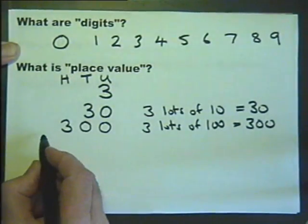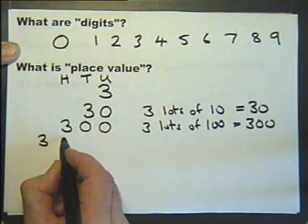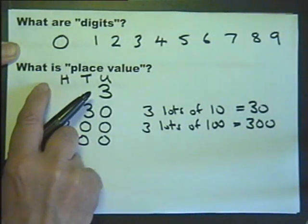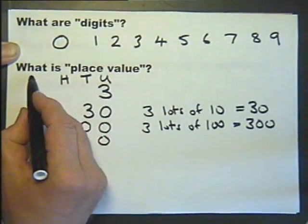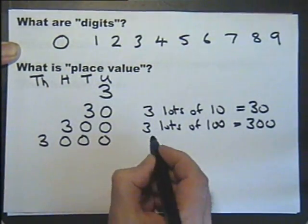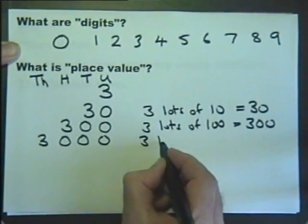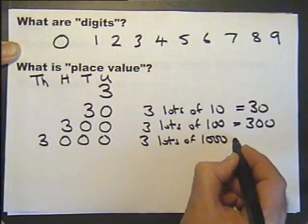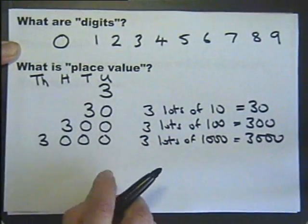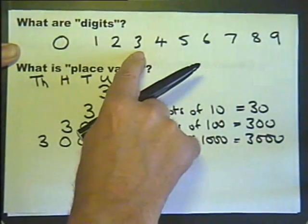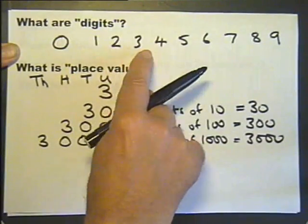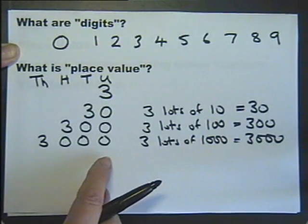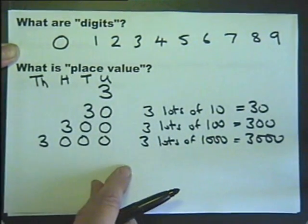We can go on one more column, for now anyway. Look at the 3 in the next column. And the next column is the thousands column. So we've got 3 lots of 1000, which is 3000. So the digit 3 can have different values depending on which column it's been placed under. So that gives us place value.